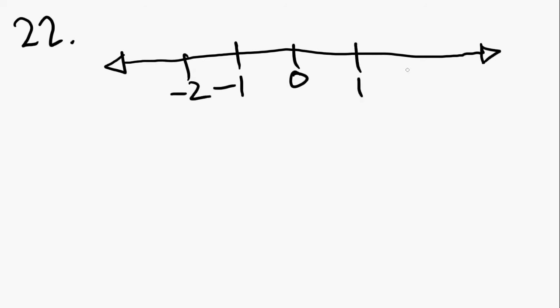Okay, number 22. They have a sort of a number line here. Looks like this. And then they have zero here, negative one, negative two, a one, and a two. And then they have A, B, C right here, D like that, and E right here. And the question says,